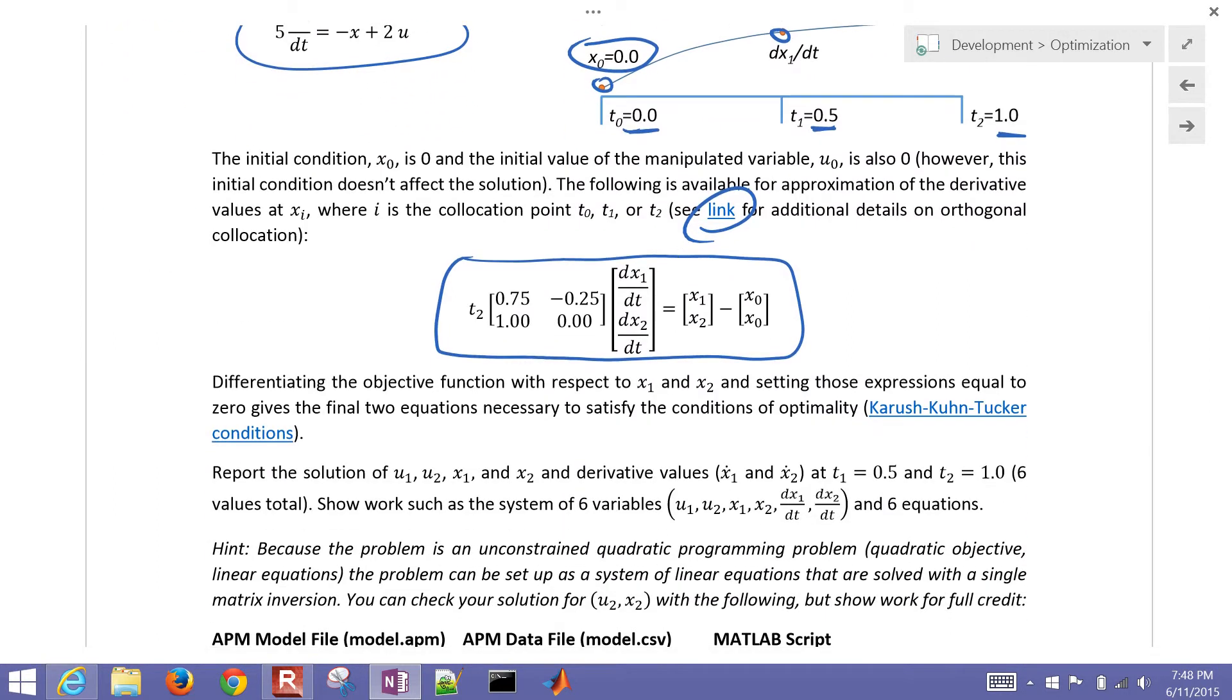We want to differentiate the objective function with respect to x1 and x2 and set those expressions equal to zero. This is part of the Karush-Kuhn-Tucker conditions, and again some additional tutorials there if you need help with the KKT conditions. So we want to report the solution of u1.